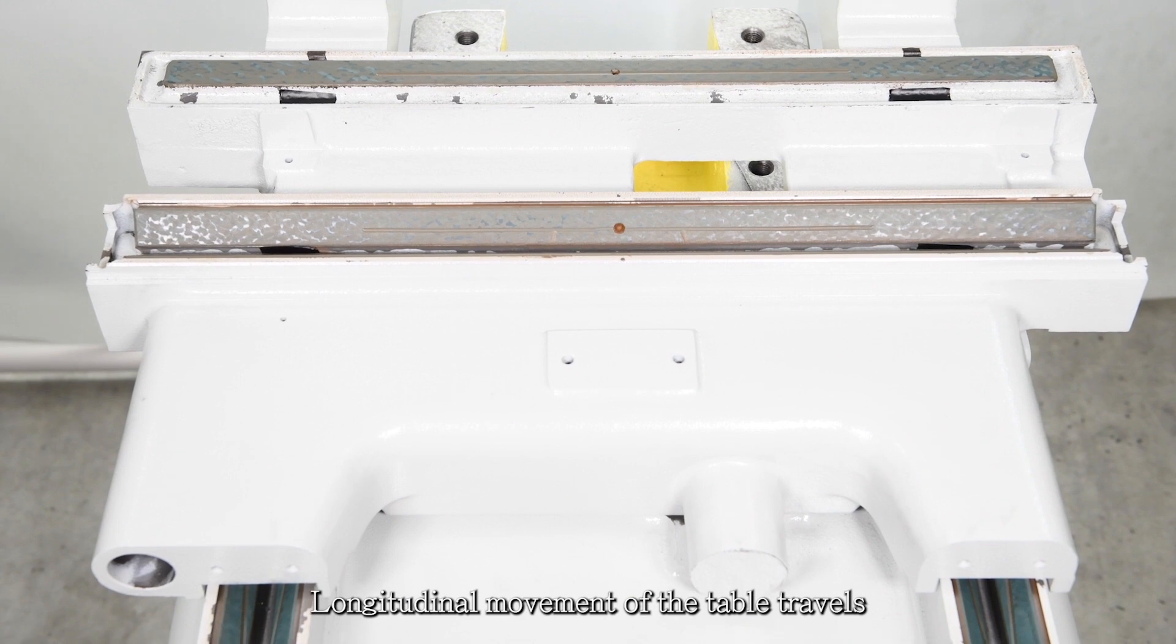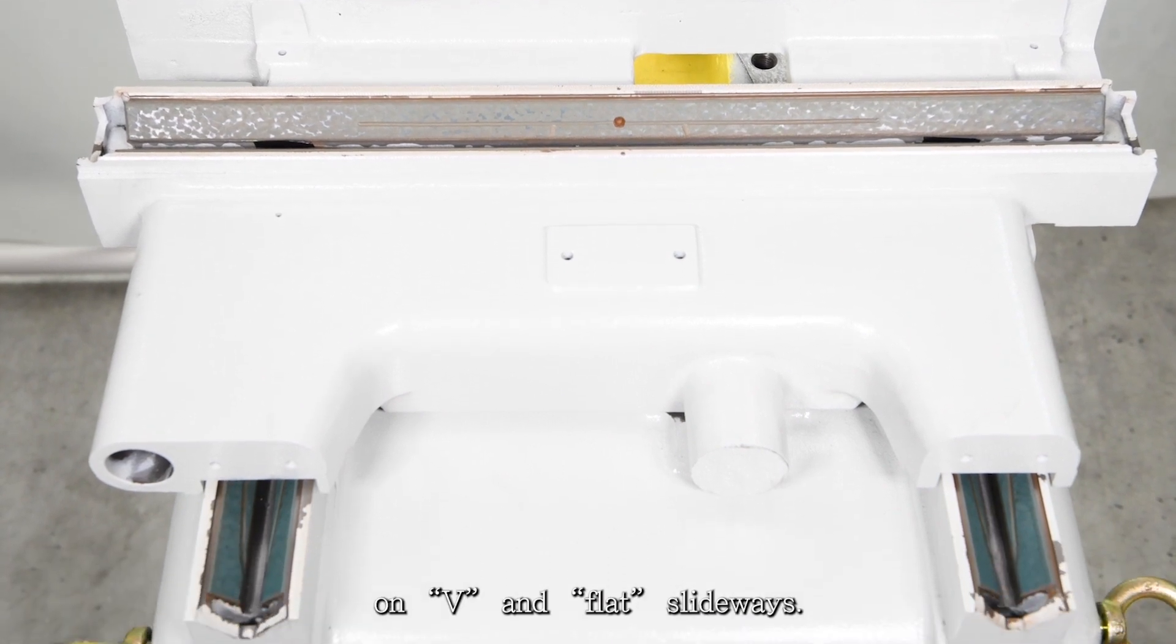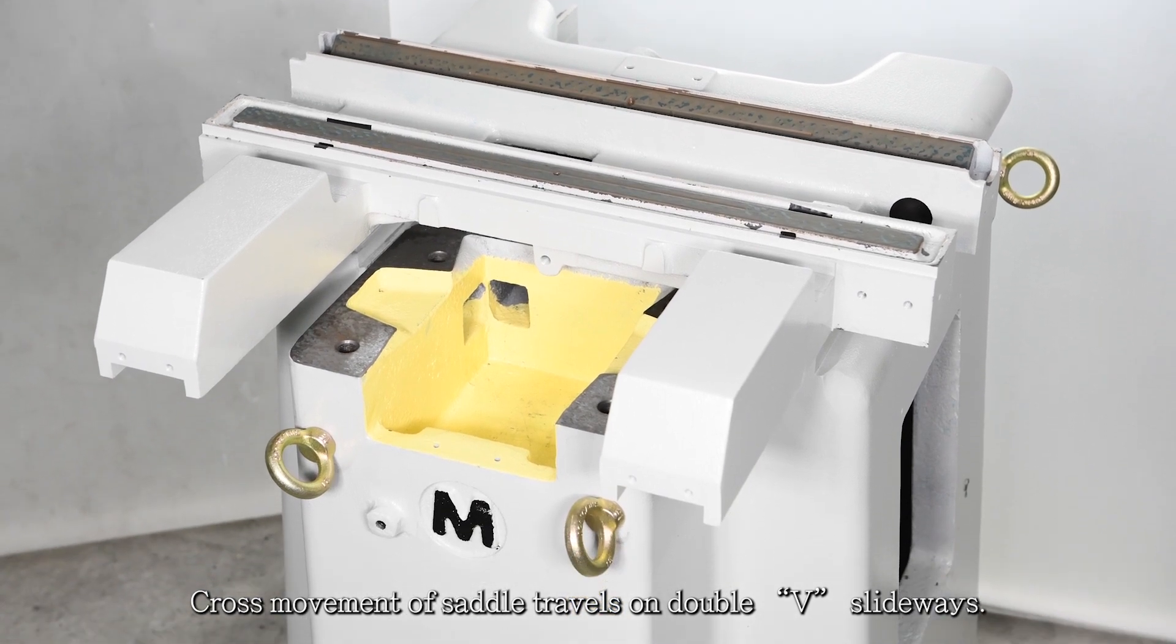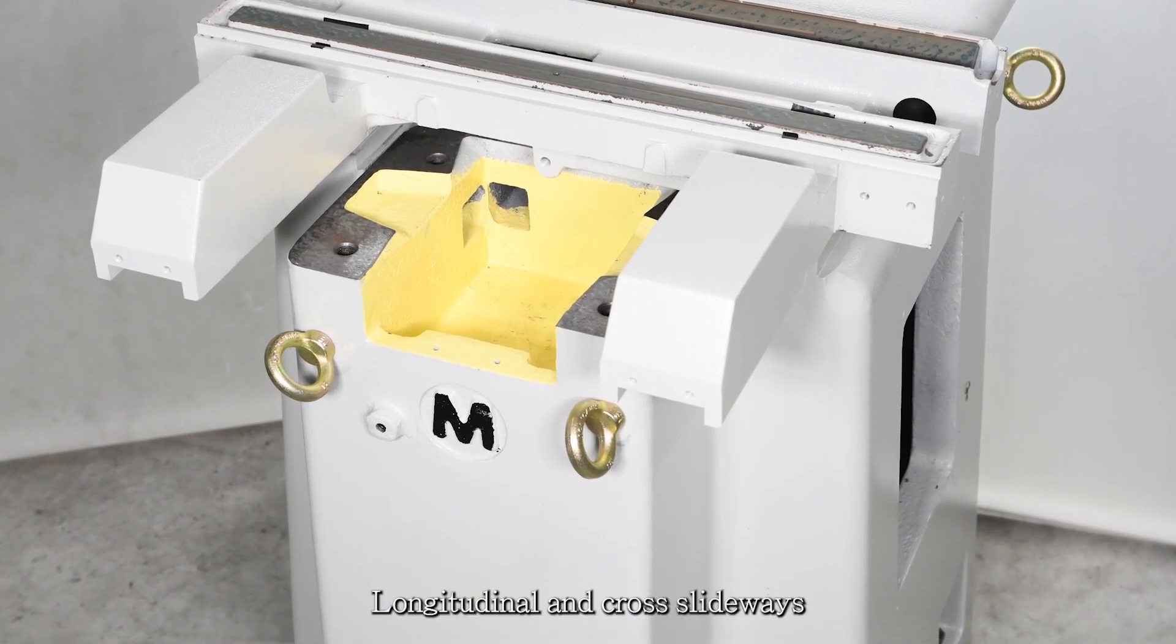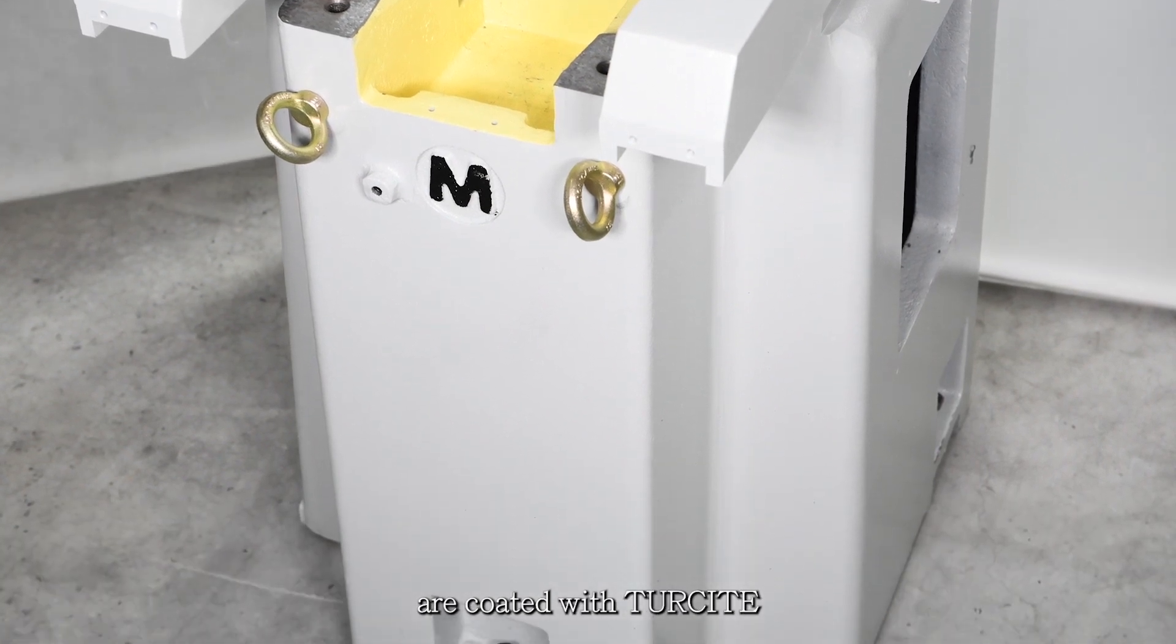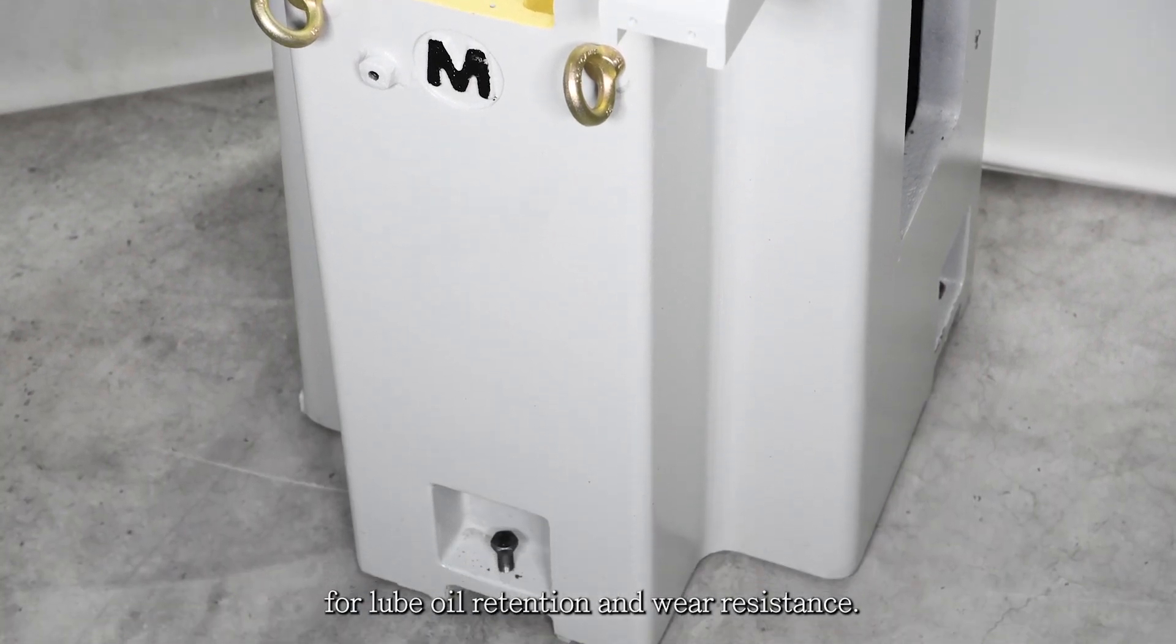Longitudinal movement of the table travels on V and flat slideways. Cross movement of saddle travels on double V slideways. Longitudinal and cross slideways are coated with tercite for lube oil retention and wear resistance.